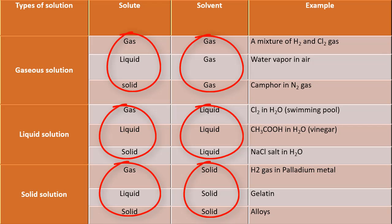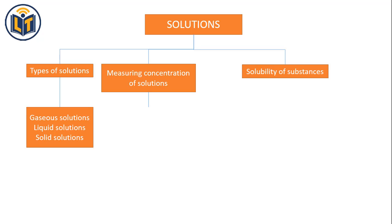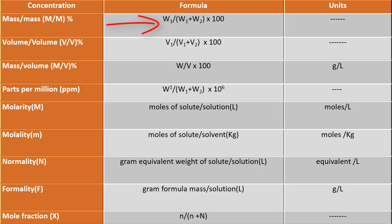There are various methods used to measure the concentration of solutions based on the physical states of components, such as mass per mass percent, mass per volume percent, volume per volume percent, parts per million, molarity, molality, normality, formality and mole fraction. First is mass per mass percent — it is the mass of solute present in total mass of solution multiplied by 100, and has no unit. Second is mass per volume percent — it is the mass of solute present in one litre of solution multiplied by 100, with unit grams per litre. Third is volume per volume percent — it is the volume of solute present in total volume of solution multiplied by 100, and has no unit.